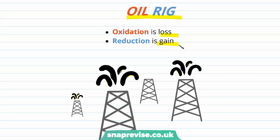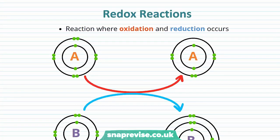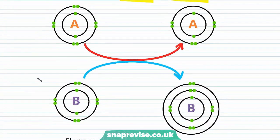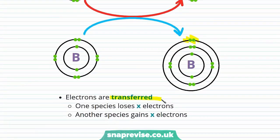A redox reaction is a reaction where both oxidation and reduction are occurring in the same reaction. We have two species, A and B. Species A is losing two electrons whereas species B is gaining two electrons. Since oxidation is the loss of electrons, A is becoming oxidized, whereas B, which is gaining electrons, is becoming reduced. Electrons are being transferred from A to B.